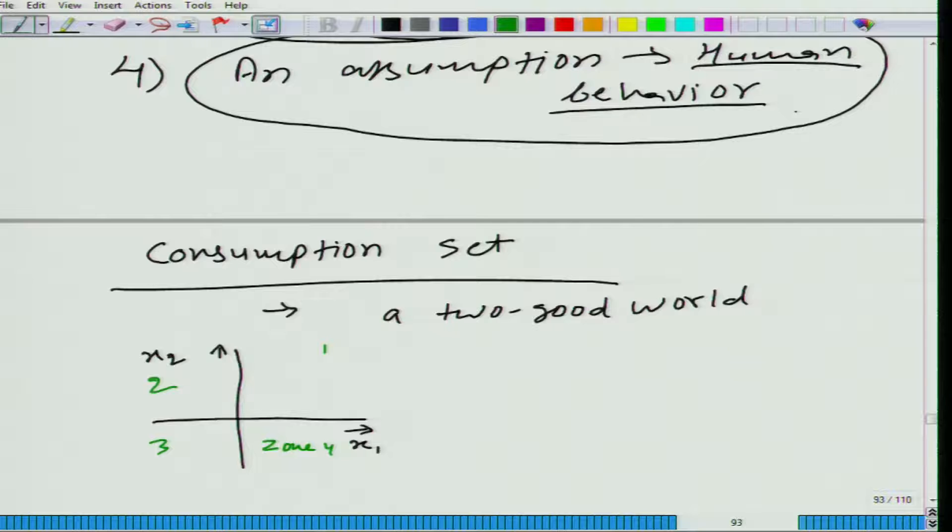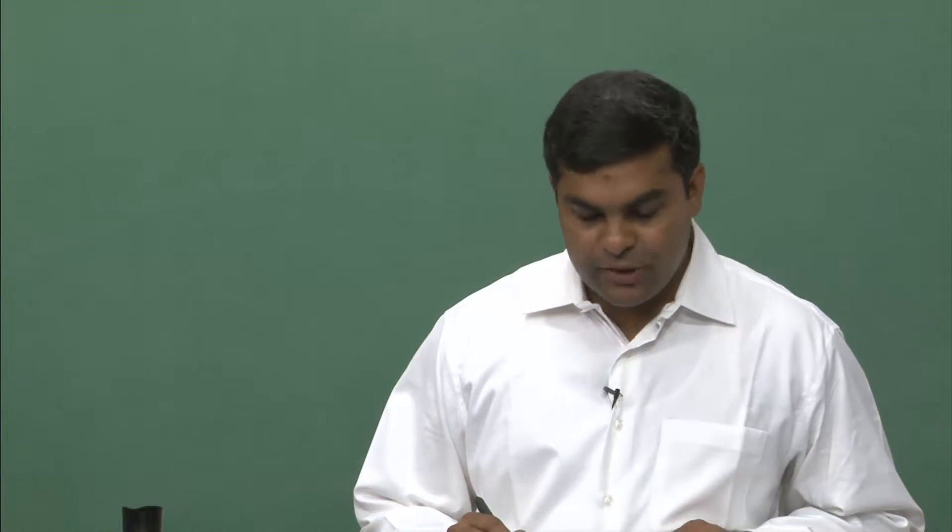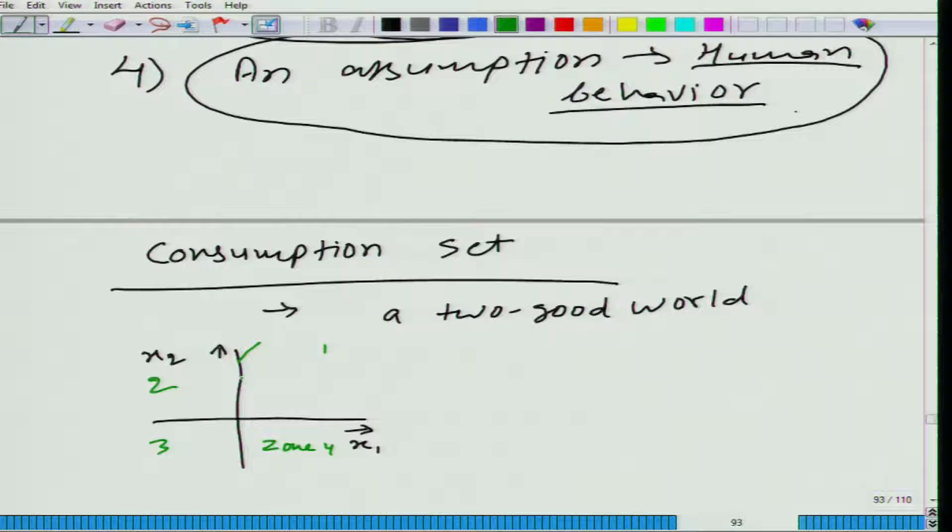Why? Consumption cannot be negative. Very good point. Consumption cannot be negative. So the consumption set, if in the two dimensional world, should contain only zone 1, or this is what? Positive orthant, positive part. When we are talking about n dimensional world, then we have to say positive orthant.